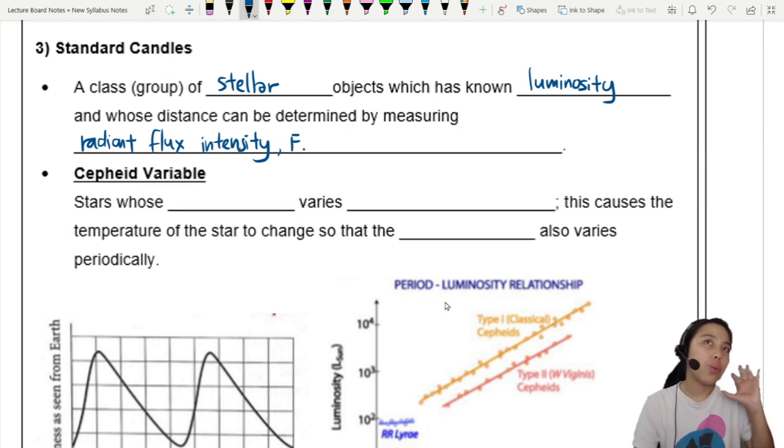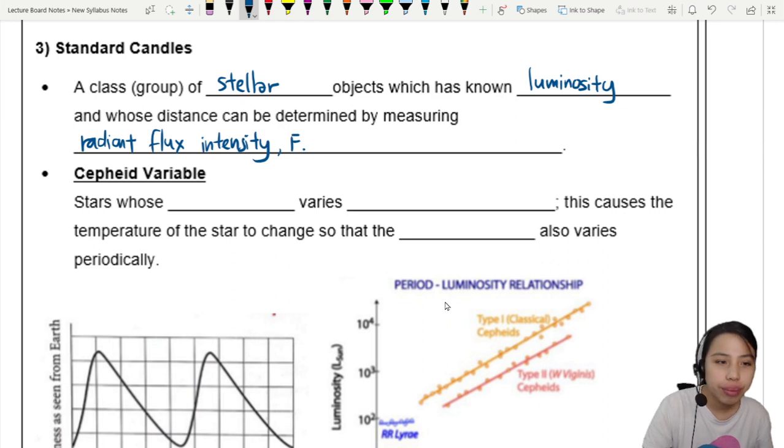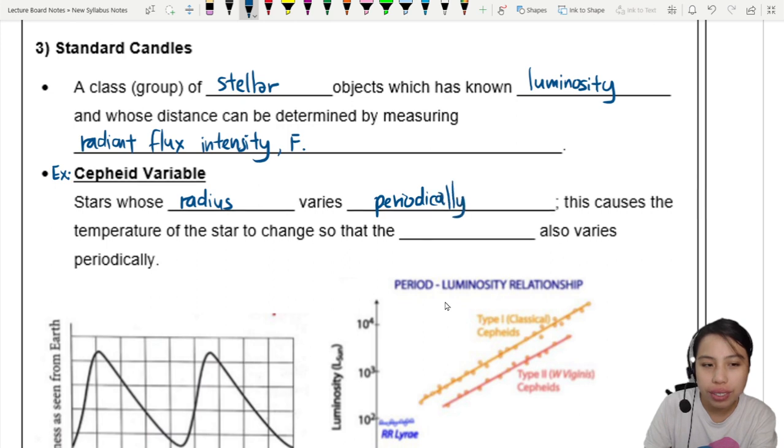One example of a standard candle is a Cepheid variable, also known as a twinkle twinkle little star. The star is blinking. Why? A Cepheid variable is a star whose radius varies periodically, and this causes the temperature of the star to change. We'll learn more about why that is.